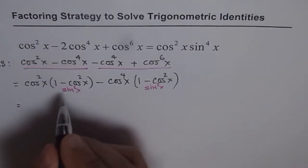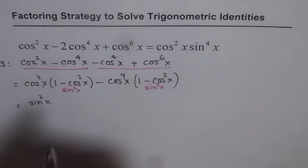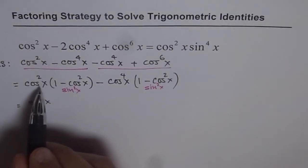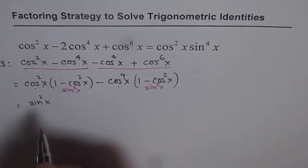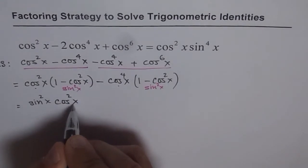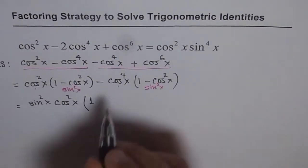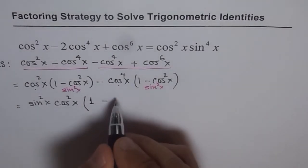So I'm going to factor sin²x now. Plus I do have cos²x also as a common factor in these two. So we get sin²x times cos²x. What are we left with here? Just the number 1, and here we're left with cos²x.